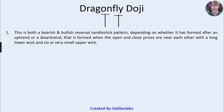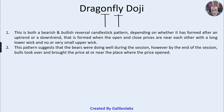The dragonfly doji is formed when the open and close prices are near each other, with a long lower wick and no or very small upper wick. This is totally the opposite of the gravestone doji. The opening and closing prices are very close to each other or equal. The gravestone doji has a long upper wick and little or no lower wick, whereas the dragonfly doji has a long lower wick and little or no upper wick.